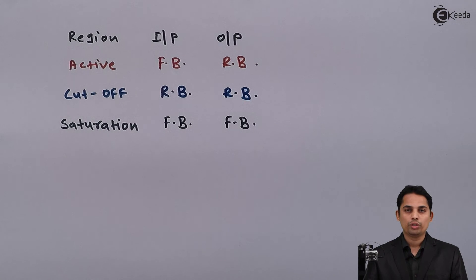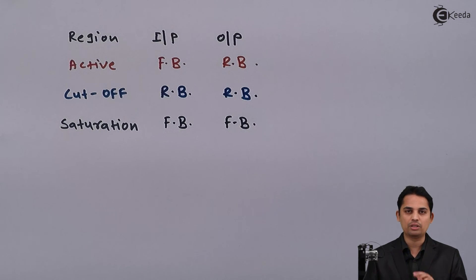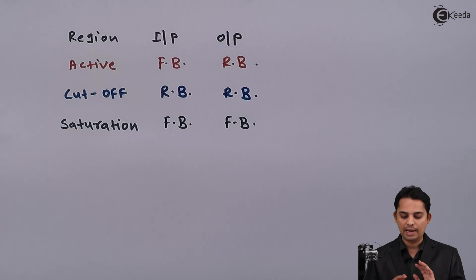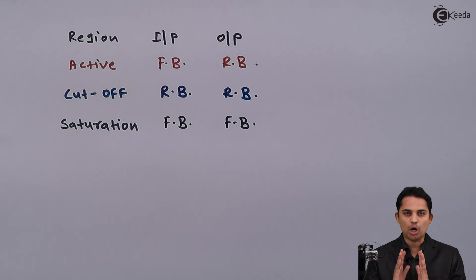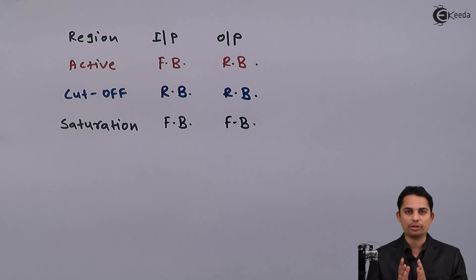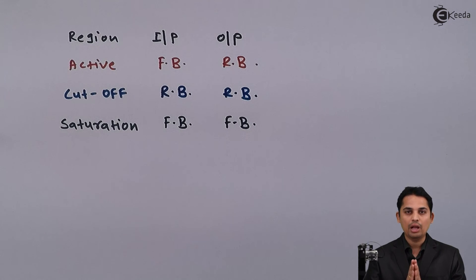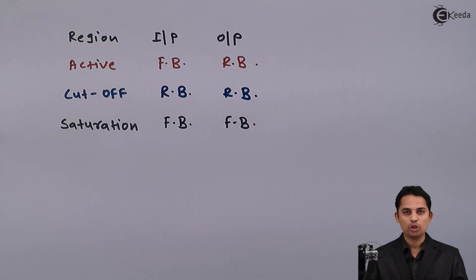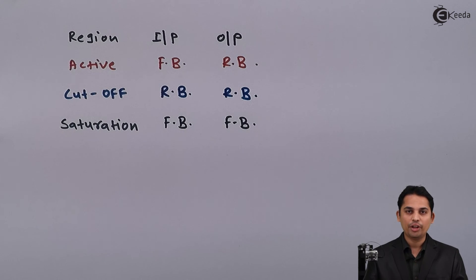So these are the three regions of operations of BJT: active region, cutoff region, and saturation region. We can observe these regions in the output characteristics of BJT. This concludes the topic of regions of operations in BJT. Thank you.